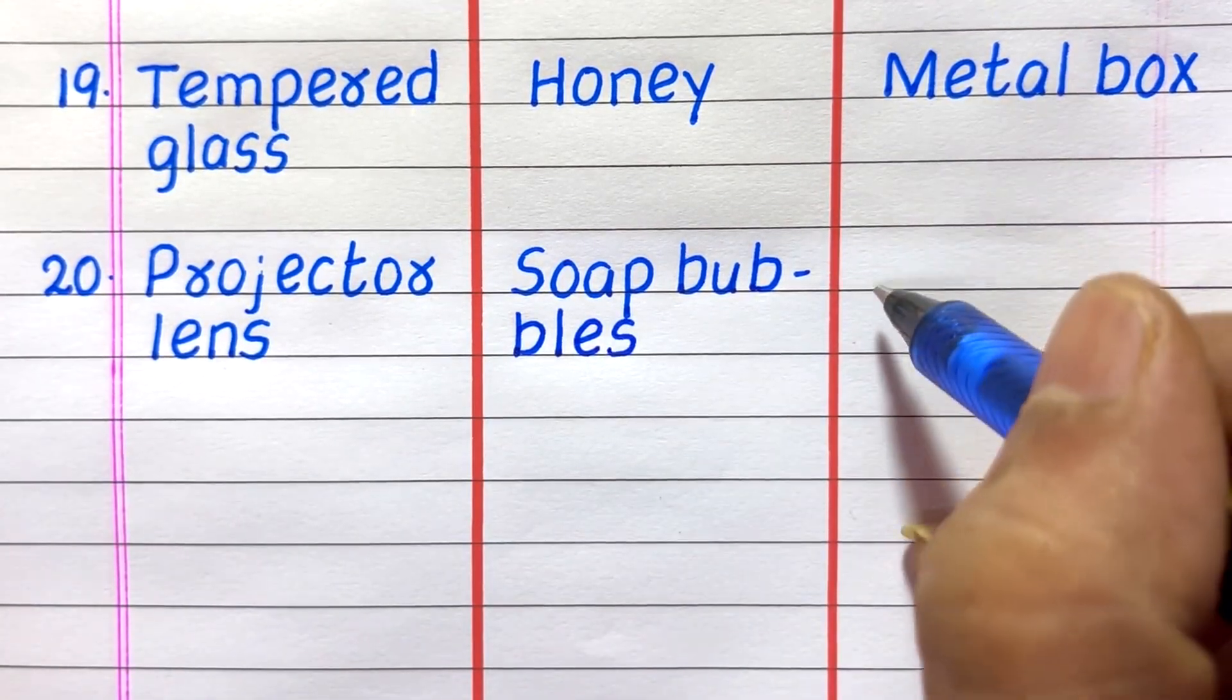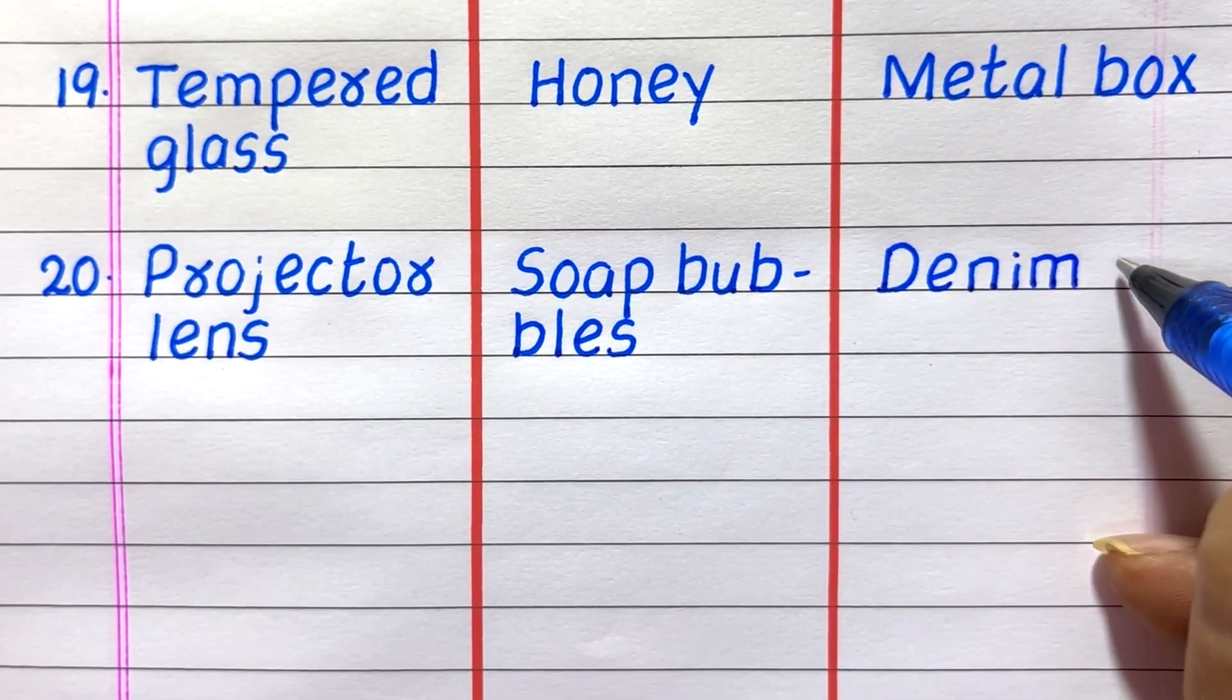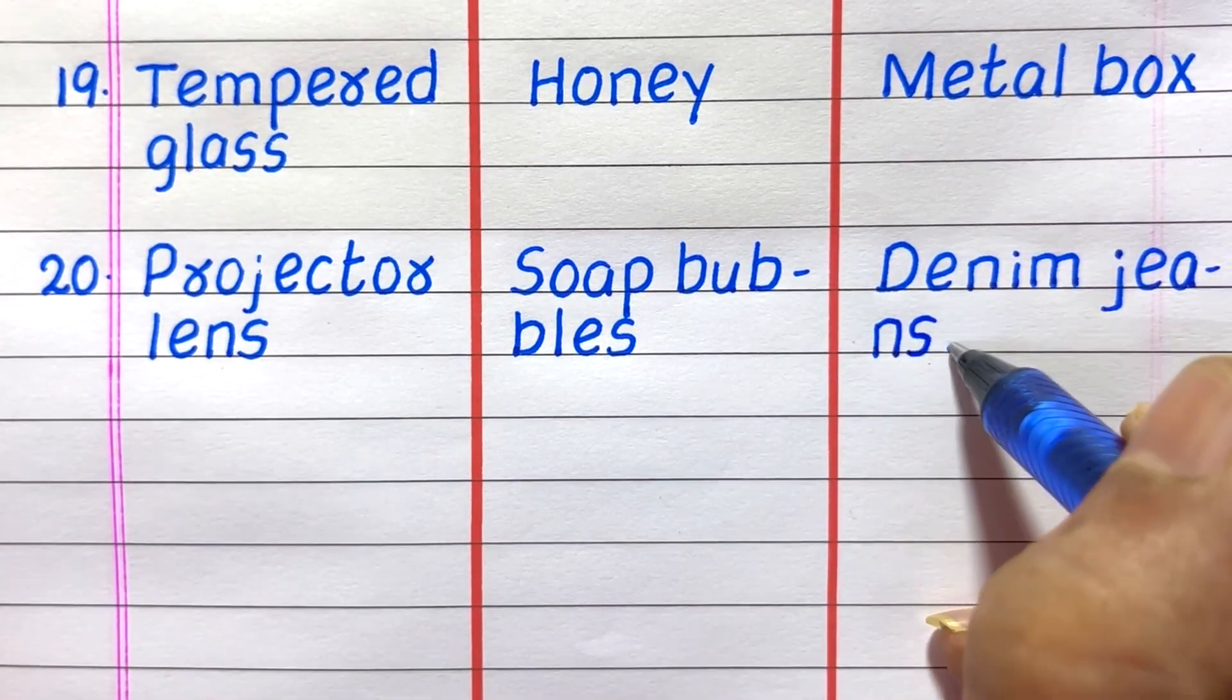Twentieth example of a transparent object is projector lens, translucent soap bubbles, opaque denim jeans.